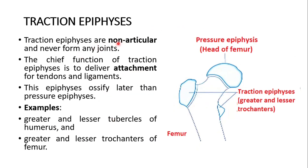Traction epiphysis. Traction epiphyses are non-articular — they do not form joints. The chief function of the traction epiphysis is to deliver attachment for tendons and ligaments. This epiphysis ossifies later than the pressure epiphysis. Examples are the greater and lesser trochanter of the femur and the greater and lesser tubercle of the humerus.